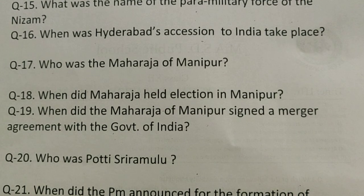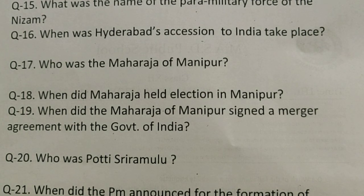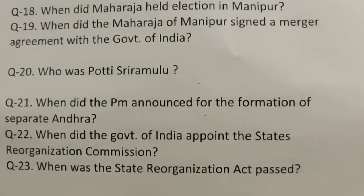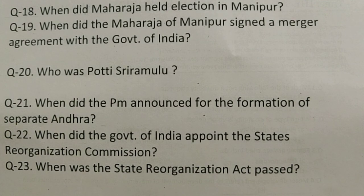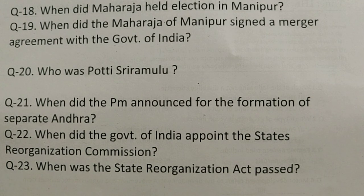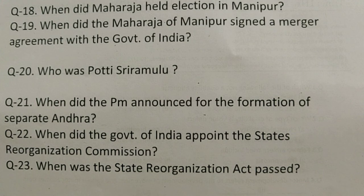Question number twenty: Who was Potti Sriramulu? He was a Congress leader, a veteran Gandhian, who went on an indefinite fast for 56 days till death, demanding a separate state — specifically that Andhra should be made separate. Question number twenty-one: When did the PM announce the formation of a separate Andhra state? The right answer is December 1952.